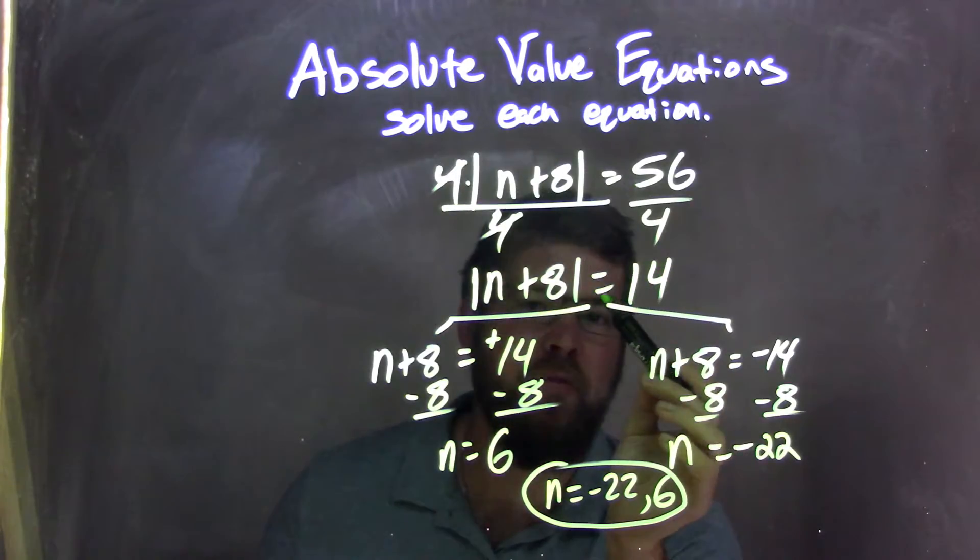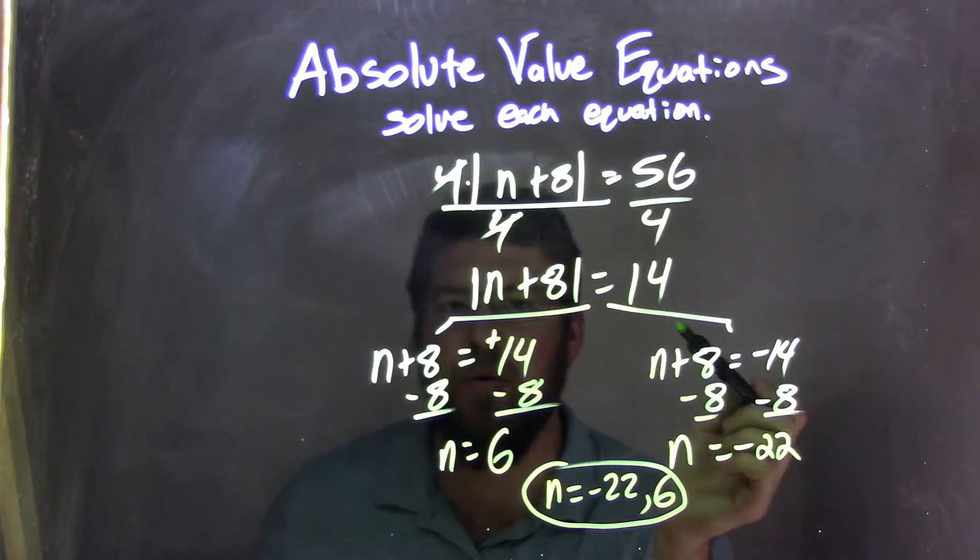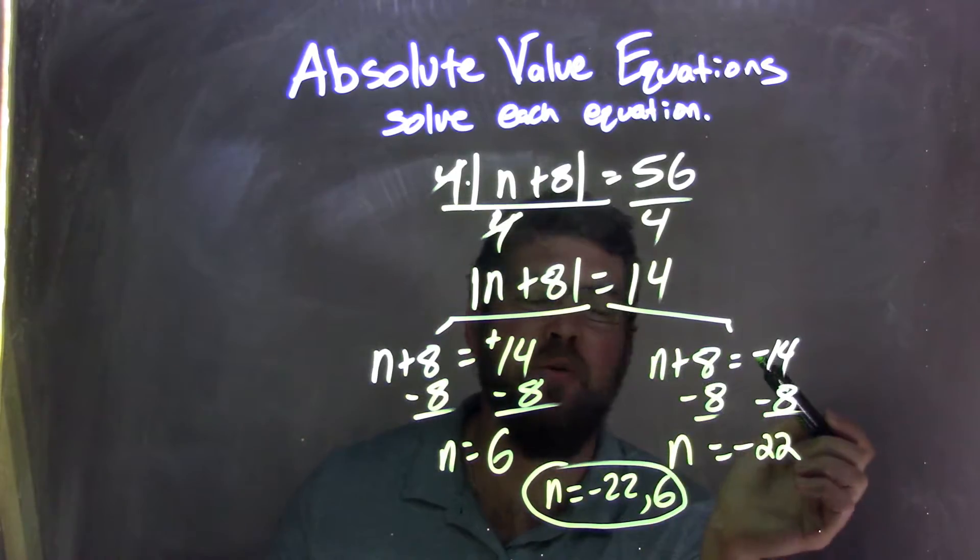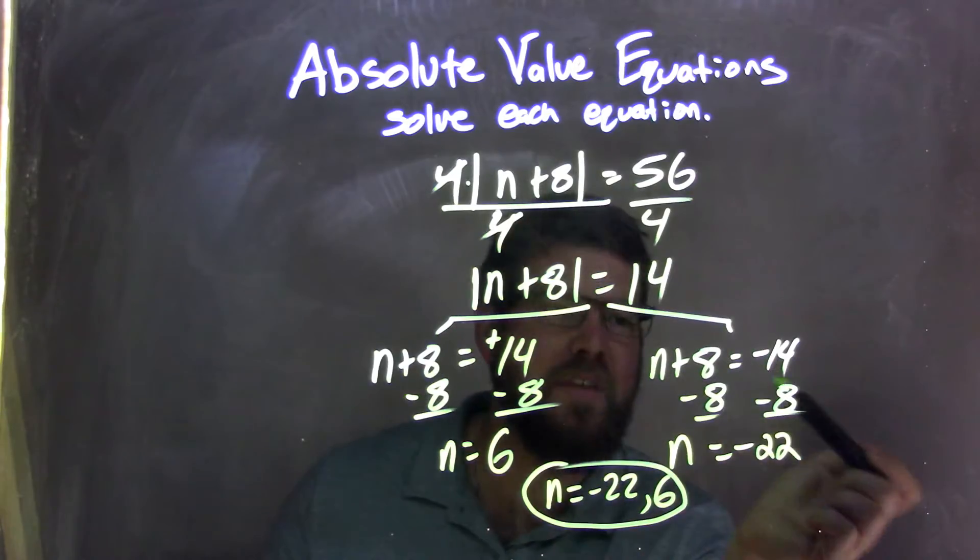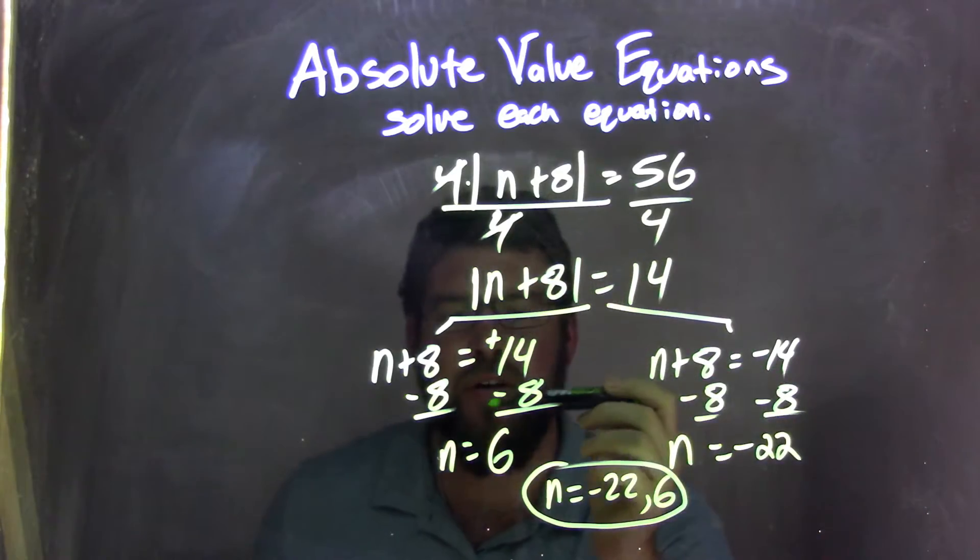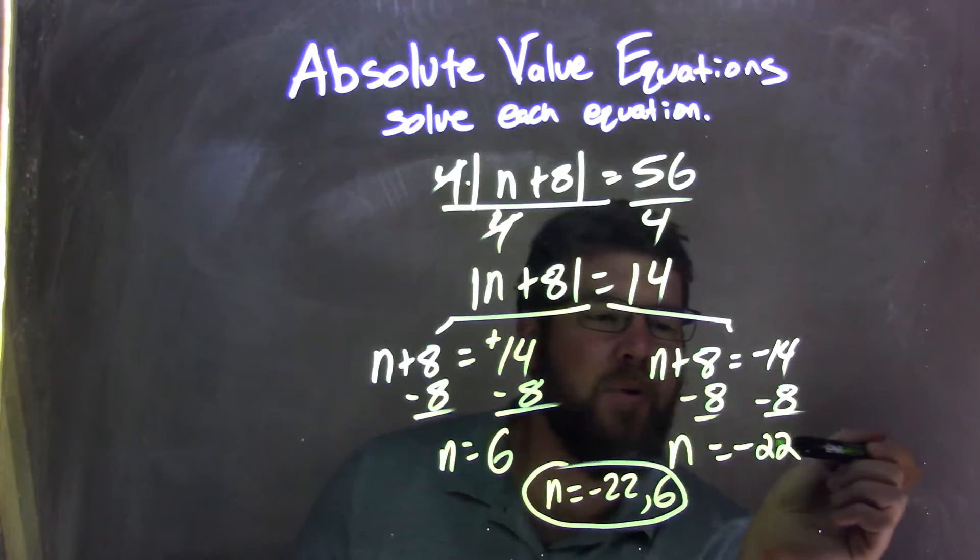From there, I can break apart the absolute value into two equations. I have n+8 equals positive 14, and n+8 equals negative 14. I solved each individually and got final answers of n equals 6 and n equals negative 22.